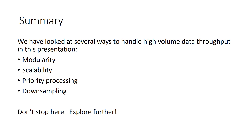In summary, we have looked at several ways to handle high-volume data throughput in this presentation: modularity, or dividing software into smaller modules; scalability, the ability to change the size of the system without changing the code; priority processing, focusing on the most important or time-sensitive data first; and downsampling, the controlled reduction of data. There are many other approaches and software engineering principles that we did not have time to cover, so I encourage you to further consider the problem of how to handle high-volume data throughput and research techniques that could be used to provide an optimal solution. Thank you.